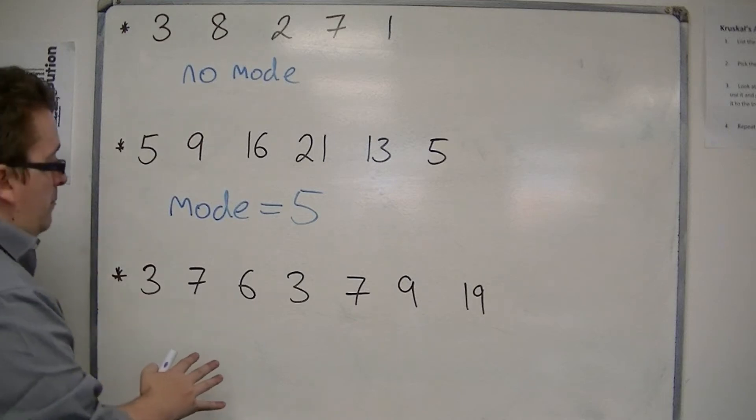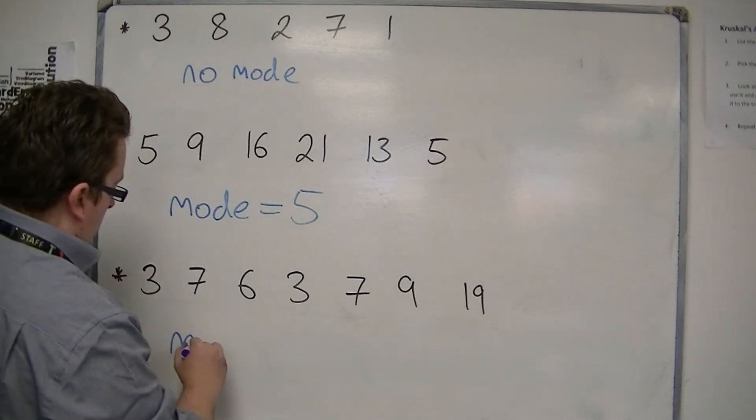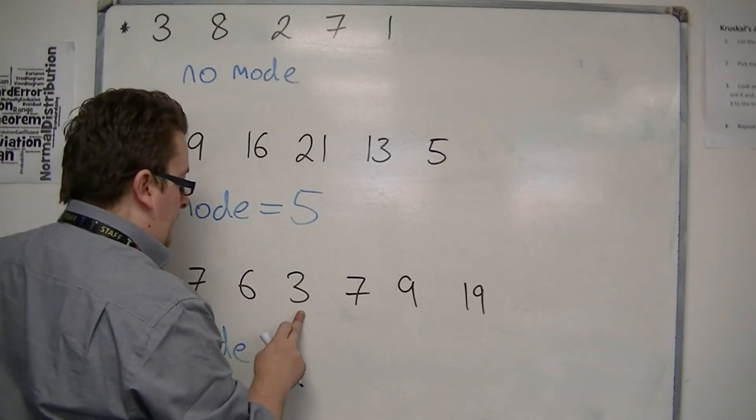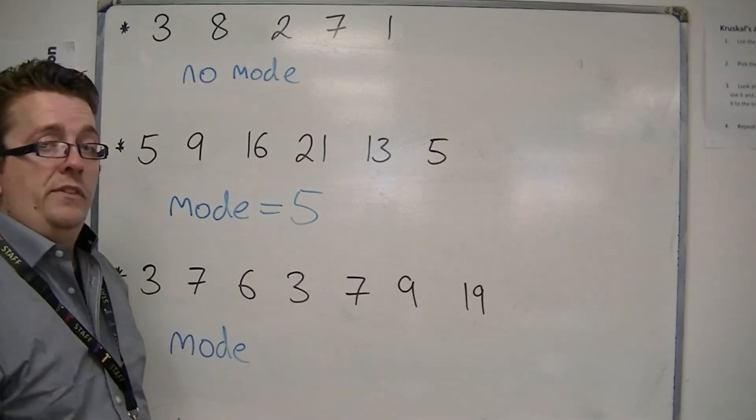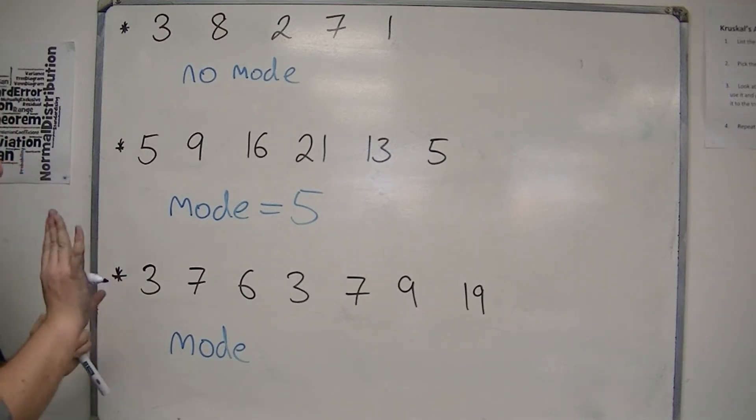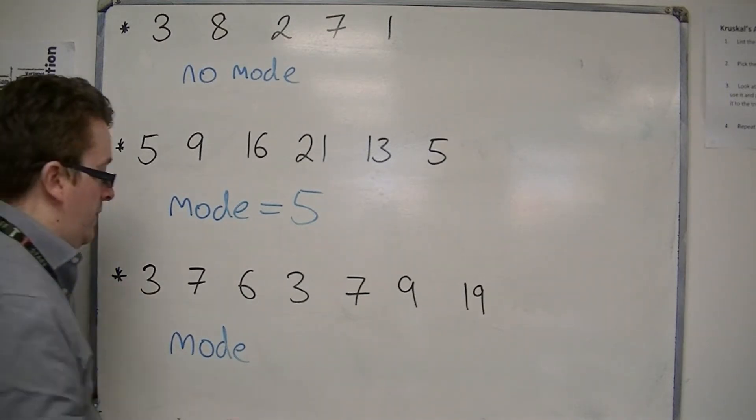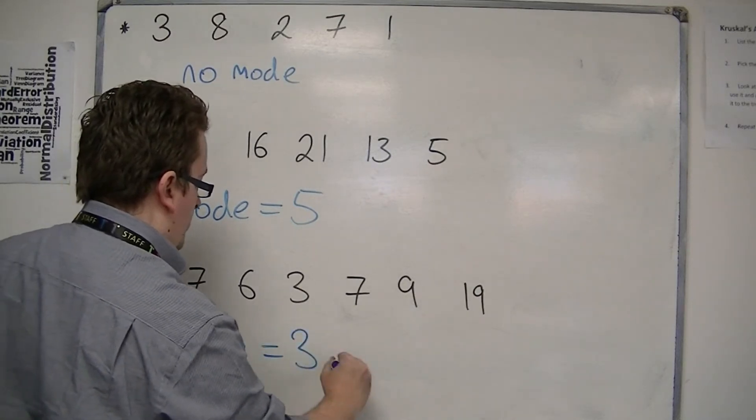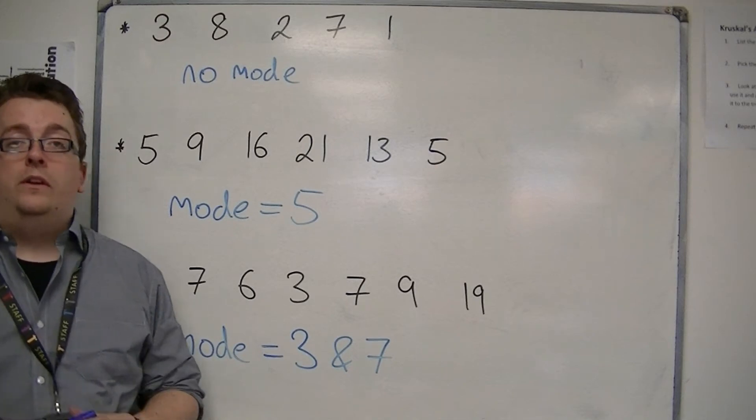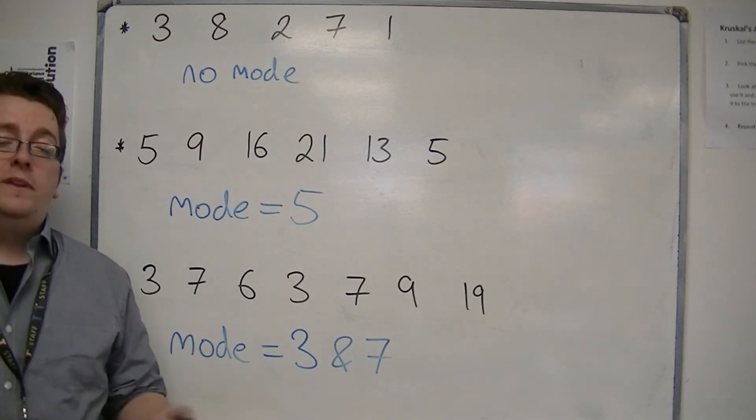In the final example, we can see that there are two threes, but there are also two sevens. So the most common number is both three and seven. So in actual fact, there are two modes. Two most common numbers.